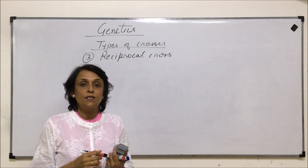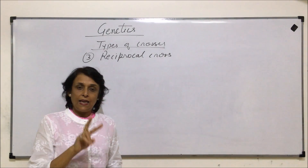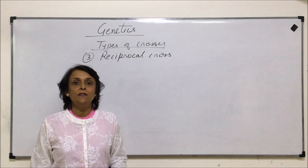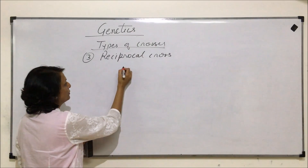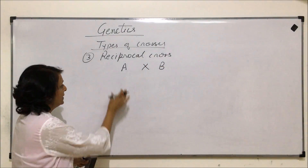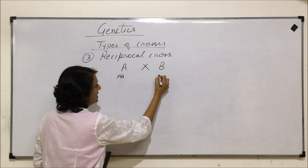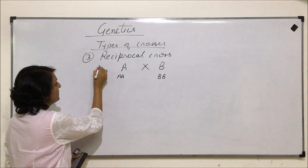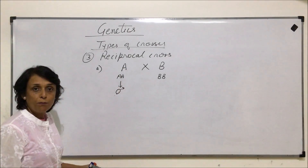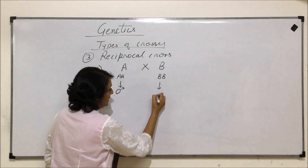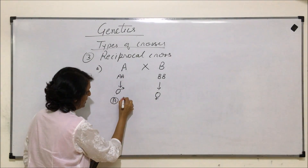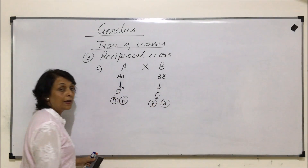The next cross we are talking of is reciprocal cross. In reciprocal cross, two organisms are crossed, and in one cross one organism provides the male gamete, and in the reciprocal cross the same parent provides the female gamete. Say there is organism A crossed with organism B — the genotype is written as AA and BB. In the first case, we are taking the male gamete from plant A and the female gamete from B.